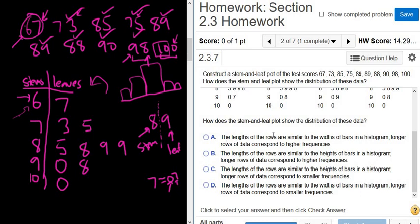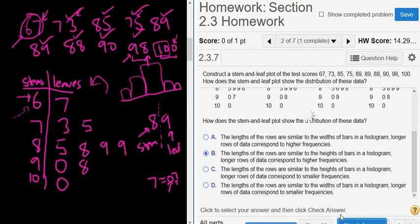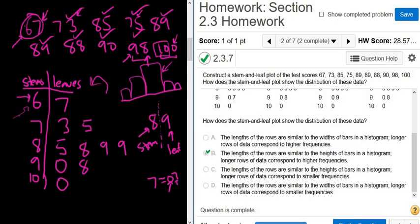So let's see. The lengths of the rows are similar to the widths of the bars in a histogram. Longer rows of data correspond to higher frequencies. So let me read that again. The lengths of the rows are similar to the widths of the bars. Actually, that's not correct. The lengths of the rows are not the widths of the bars. The lengths of the rows are the heights of the frequencies. So heights of the bars. The lengths of the rows are similar to the heights. It's this one here. So the lengths of the rows correspond to the heights of the histogram. It's kind of difficult to read three incorrect choices, so always take your time on these follow-up questions.